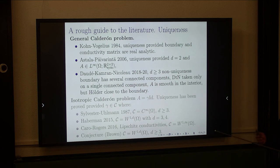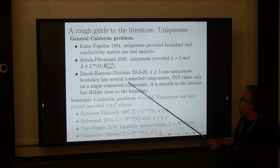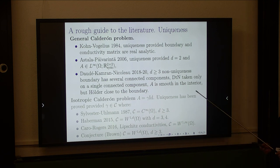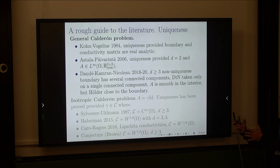In general, the problem is open. There are some examples of non-uniqueness — there is a nice example by Daudet, Cameron, and Nicolò for dimension greater than or equal to three. They give an example of non-uniqueness in the case where you have a manifold with boundary having several connected components: you input some current in one component of the boundary and measure at another connected component, and they produce examples in which the map phi is non-unique.